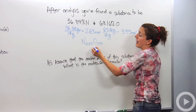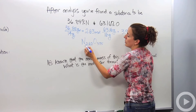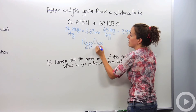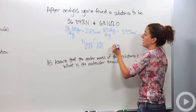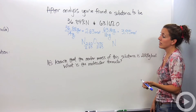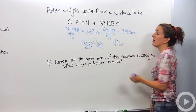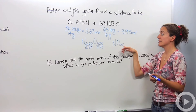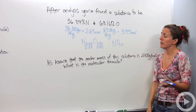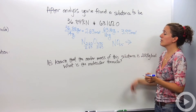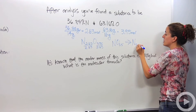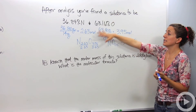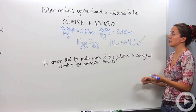To eliminate the decimals, we divide everything by the smallest value, which is 2.63. That gives N1 and O1.5. It's still a decimal, so I multiply everything by 2, giving N2 O3. Is this an empirical formula? Yes indeed it is — it follows everything we talked about. So N2O3 is the empirical formula we just discovered.